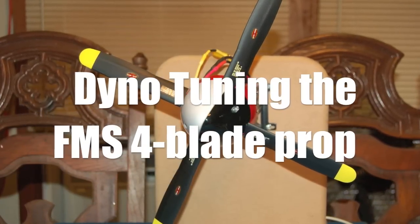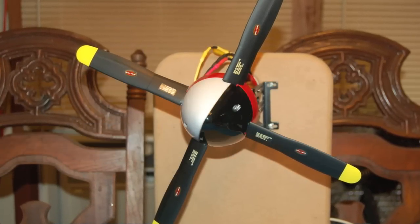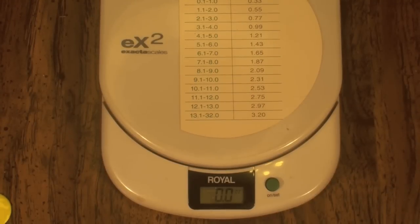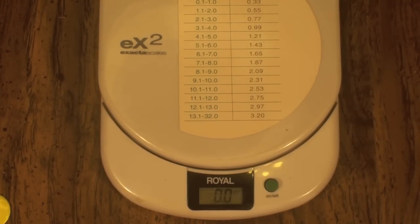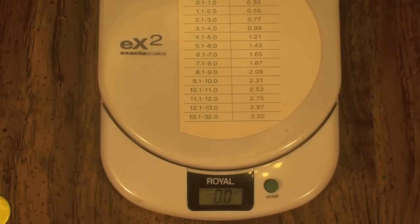This is how I dyno-tune the FMS 14-inch four-blade prop. The first thing I like to do is I will weigh each one of the blades independently to make sure that they're all going to weigh the same.